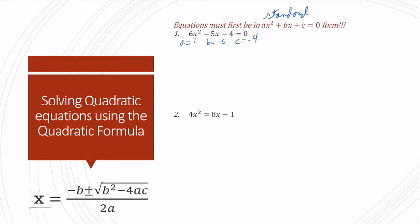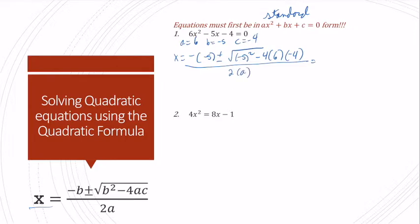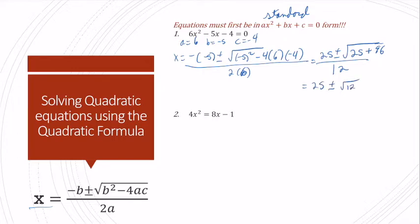I'm going to substitute into this equation our values of a, b, and c. So I have x equals negative negative 5 plus or minus the square root of negative 5 squared minus 4 times 6 times negative 4, all over 2a. This simplifies to 25 plus or minus the square root of 25 plus 4 times 6 times 4, which becomes a positive 96, all over 2a which was 6, so all over 12. 25 plus 96 is 121, so I've got 25 plus or minus the square root of 121 over 12.